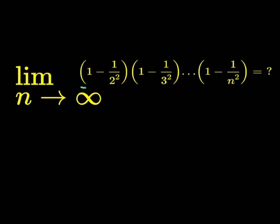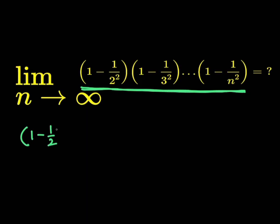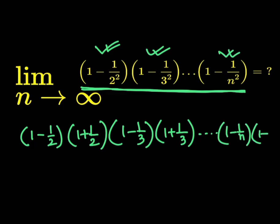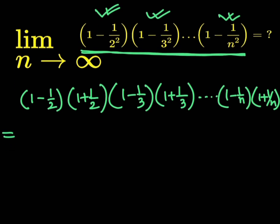Hello everyone, today we are here with a limit problem. We have to find out this limit. Let us simplify: one minus half into one plus half, then one minus one third into one plus one third, and so on, up to one minus one by n into one plus one by n.